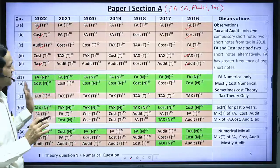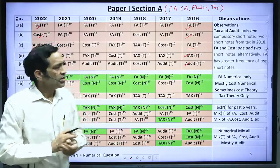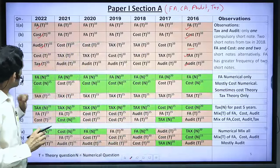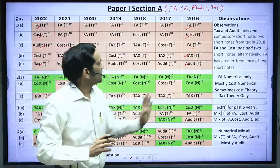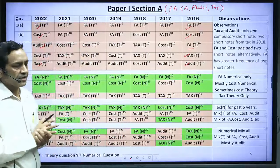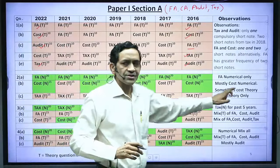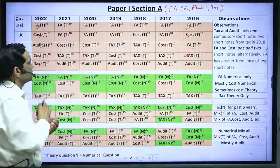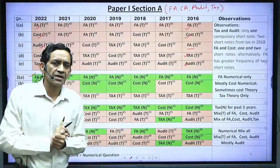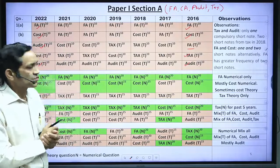Question number 2 follows a set pattern: Question 2(a) is generally a Financial Accounting numerical only, and Question 2(b) is generally a Cost Accounting numerical — sometimes Cost Accounting theory. Question 2(c) has a set pattern where theory of Income Tax is asked. We generally suggest you attempt question number 2 because you get two numerical questions that are highly marks-fetching. In question number 3(a), generally a Tax numerical is asked.